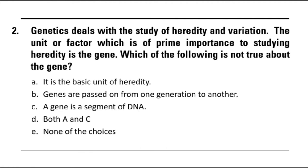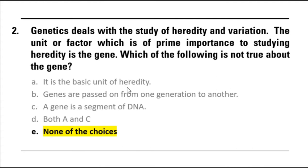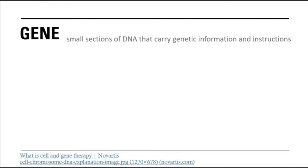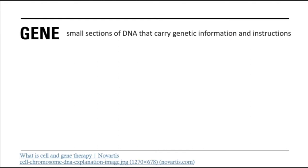The correct answer is again letter E, none of the choices. We know from our basic knowledge in biology that the gene is the basic unit of heredity or inheritance, and that genes are passed on from one generation to the next, or from parent to offspring. Structurally, a gene is a segment of DNA. So all choices A, B, C and D are correct — all describe the gene. A gene consists of small sections of DNA that carry genetic information and instructions for making proteins, which help build and maintain the body.